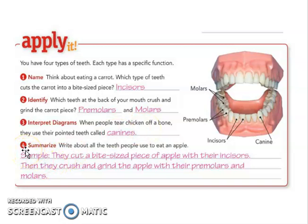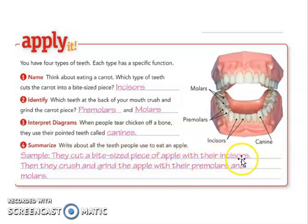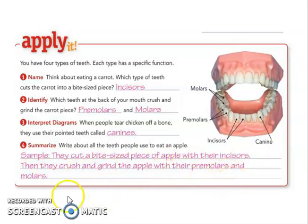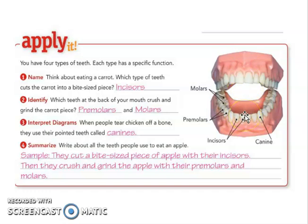Let's make a summary. When eating an apple: first, you cut a bite-sized piece with the incisors, since incisors are the frontal teeth. Then you crush and grind the apple with the premolar and molar teeth. I will continue this topic in part 2. Thank you.